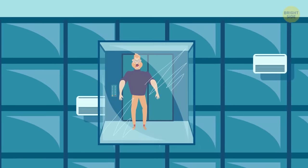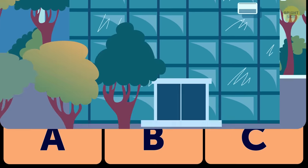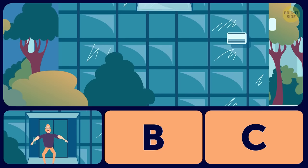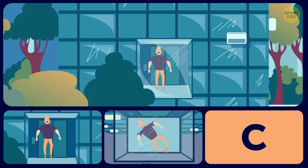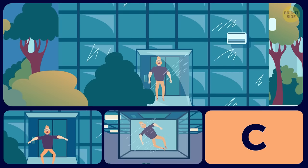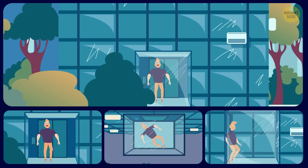8. If an elevator you were in suddenly started to fall, you would A. Jump in the air a split second before the cabin hits the ground. B. Lie down on your back on the elevator floor. C. Press your body to the elevator wall.